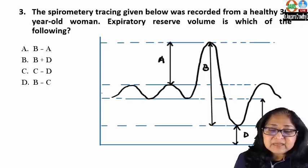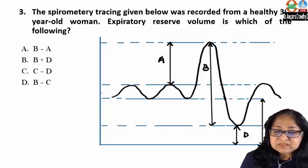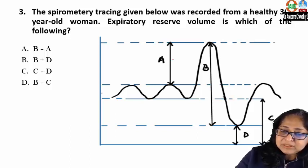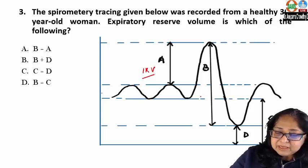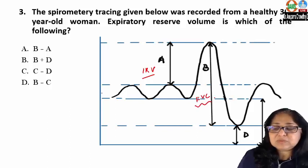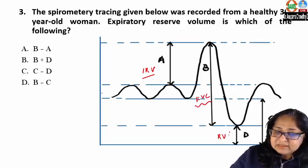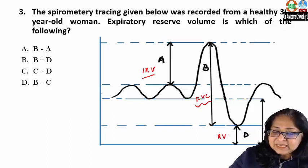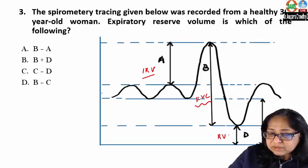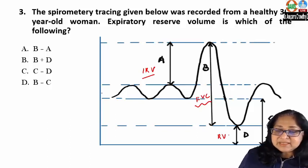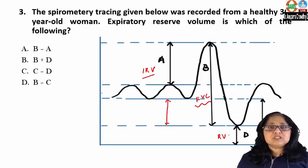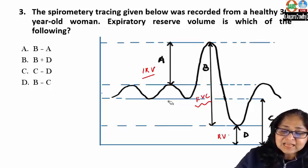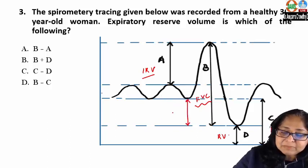The next question: the spirometry tracing given below was recorded from a 30-year-old woman. Expiratory reserve volume is which of the following? A is inspiratory reserve volume. B is vital capacity, also known as forced vital capacity. D is residual volume. C is functional residual capacity. Expiratory reserve volume is the volume of air expired forcefully over and above a tidal expiration with maximum effort.